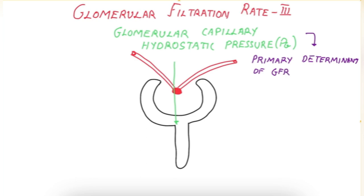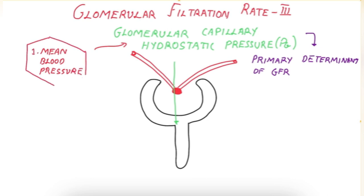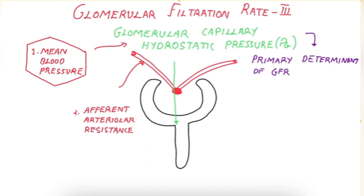The glomerular capillary hydrostatic pressure is in turn affected by three factors: the mean arterial blood pressure, the afferent arteriolar resistance, and the efferent arteriolar resistance.